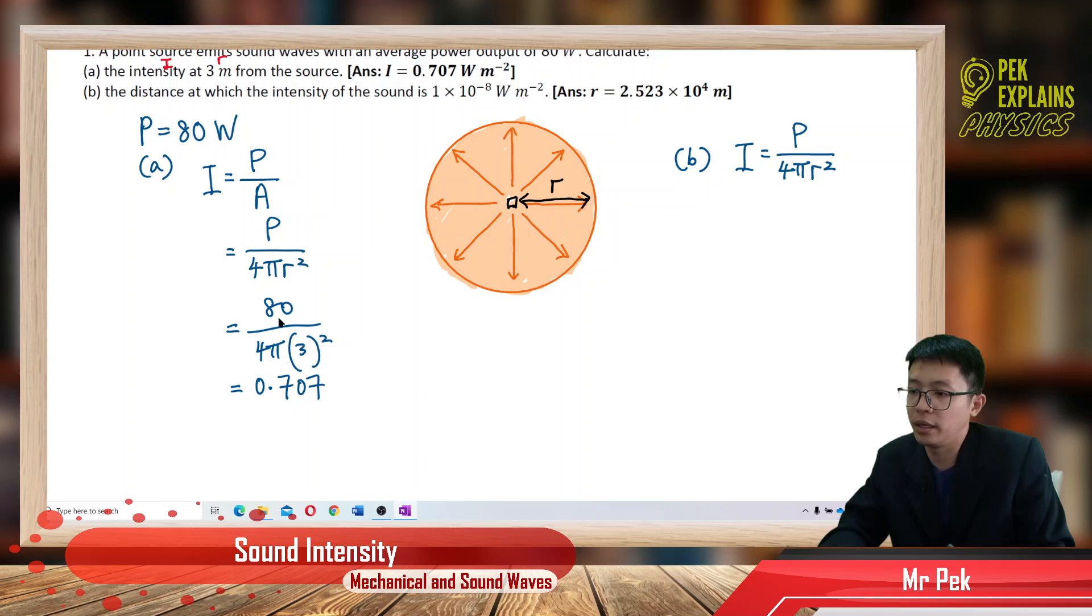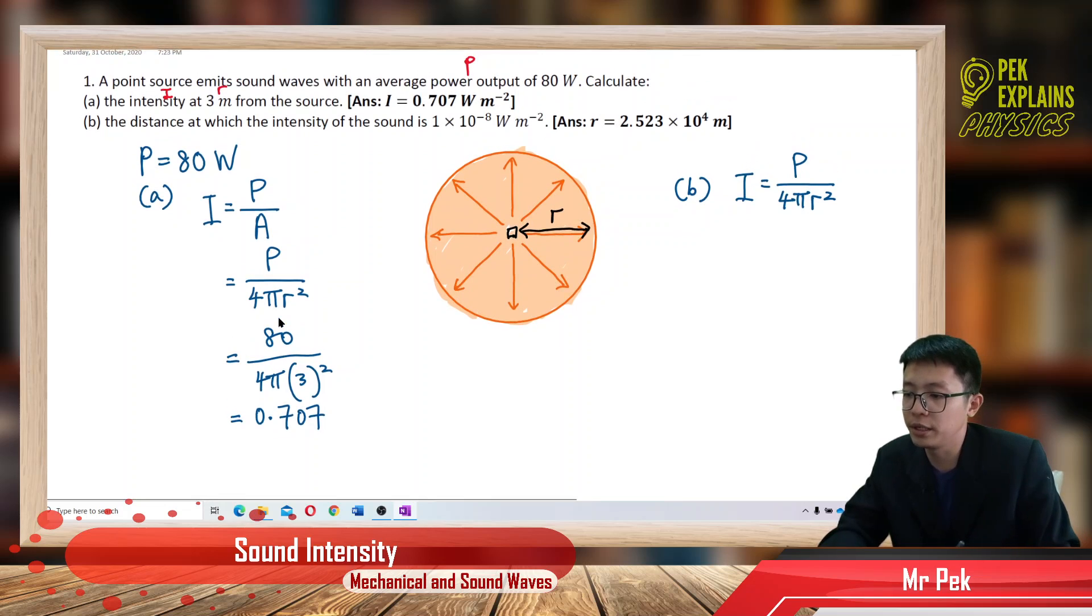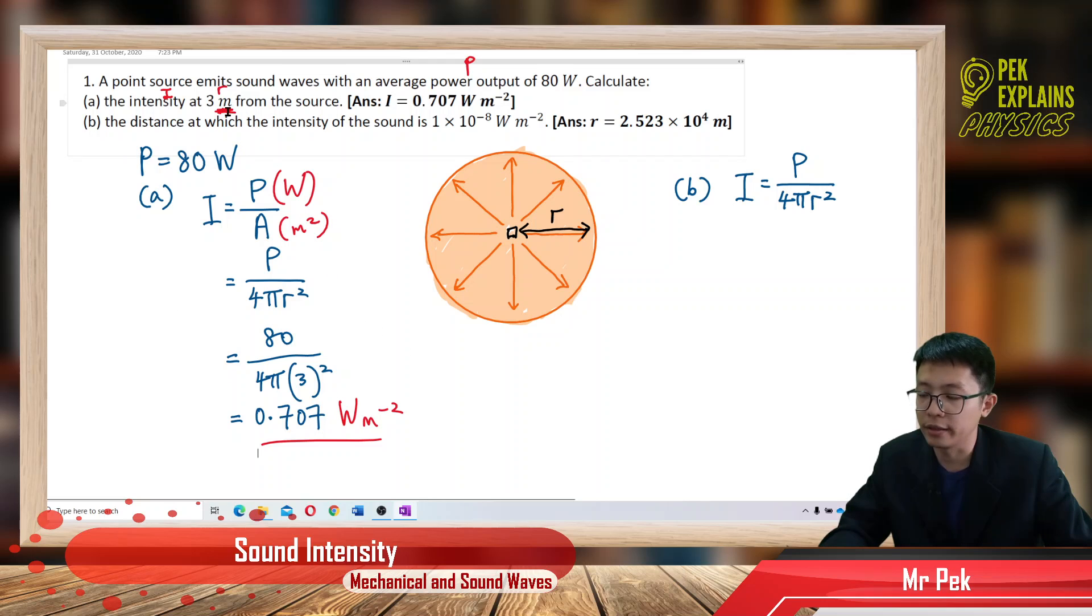What's the unit? If I forget a unit, just check the formula. My power is in Watt. My area is meter square. Is it meter? Yeah, it is meter. So, my intensity should be Watt per meter square. That's the value for intensity at 3 meter away from the source.